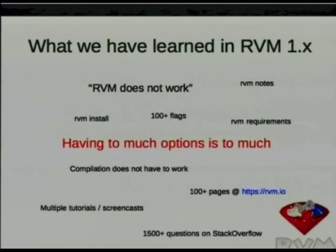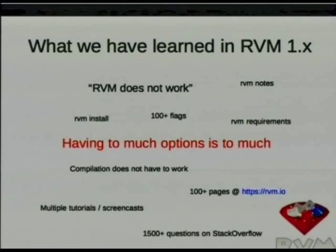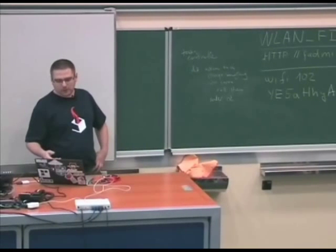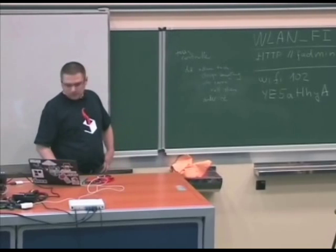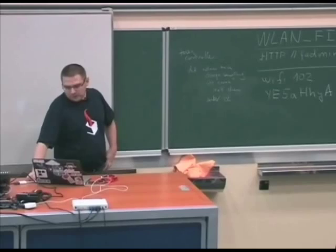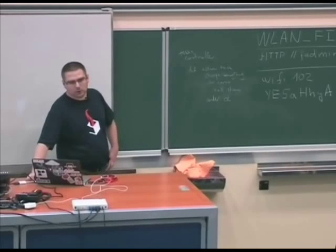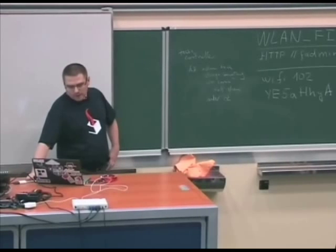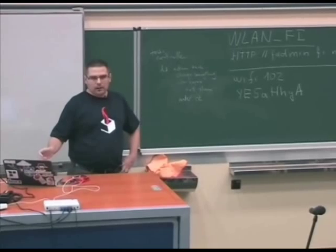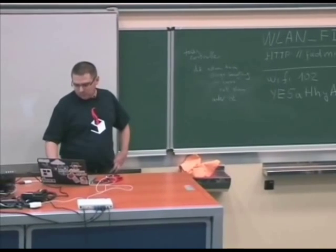For every platform, there is RVM requirements which displays information about prerequisites for Ruby, for different implementations, for your platform, and anything special that has to be done. There are 1,500 pages of questions at Stack Overflow, 100 pages of documentation from RVM, and multiple tutorials and screencasts for every system — there are even tutorials for Windows on how to use RVM.